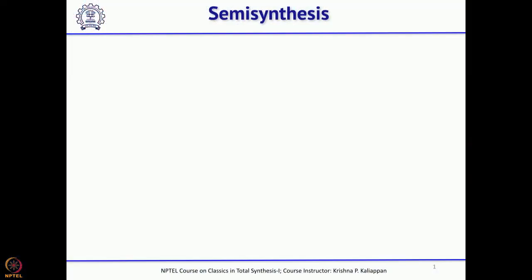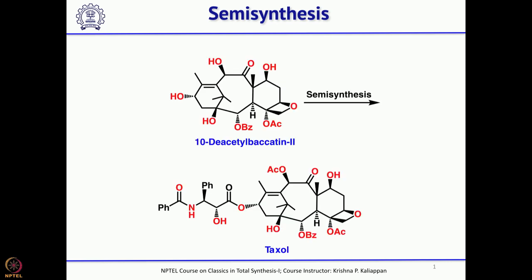Now we will move to what is semi synthesis. Sometimes when you are trying to make a complex molecule, there is a possibility that from another natural source, a molecule which is very close to the molecule you are going to synthesize may be available. Then what you can do is take that molecule and do only a few functional group transformations to synthesize the molecule you want to make. This molecule is a diterpene called Taxol or Paclitaxel, a drug used for the treatment of ovarian and other types of cancer.